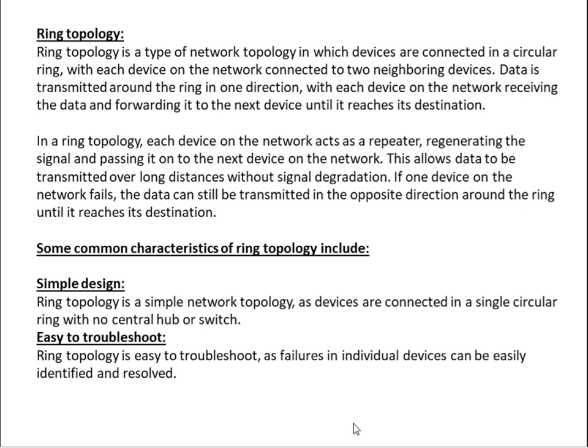In a ring topology, each device on the network acts as a repeater, regenerating the signal and passing it on to the next device. This allows data to be transmitted over long distances without signal degradation.